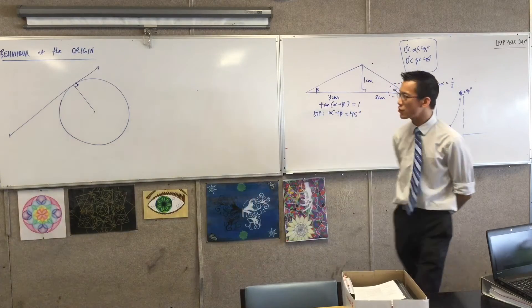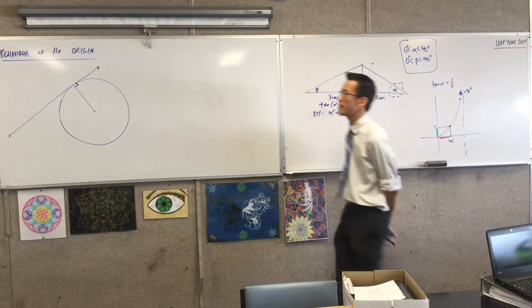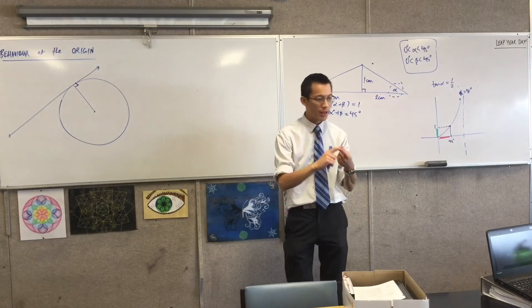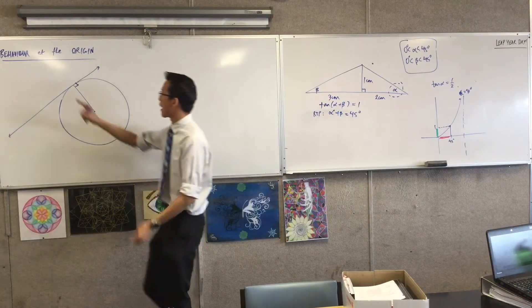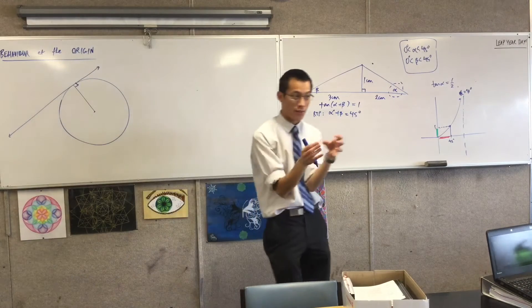Now I'm going to introduce a couple of constructions onto this which are going to help me understand how in particular sine and tan behave at the origin when the values of theta get very, very little.